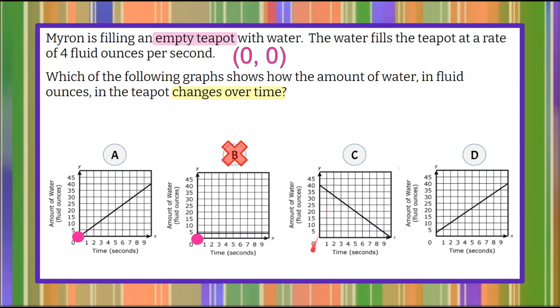Looking at graph C, and we look at (0, 0), the line does not begin at (0, 0). We can see that this graph is showing you that at zero seconds the teapot has 40 fluid ounces of water in it. Therefore, this graph cannot represent the empty teapot.